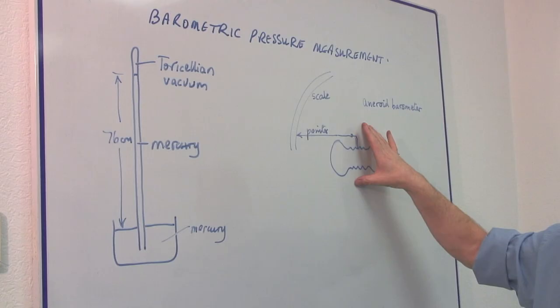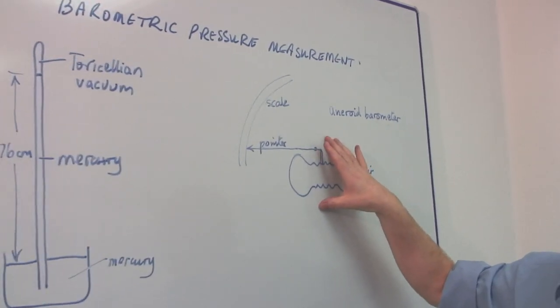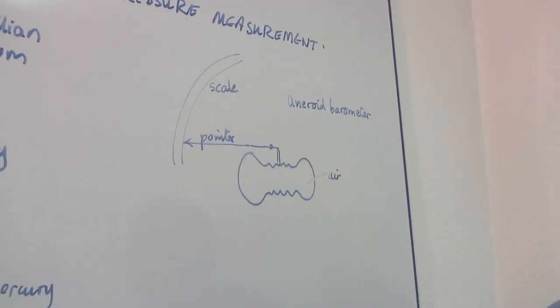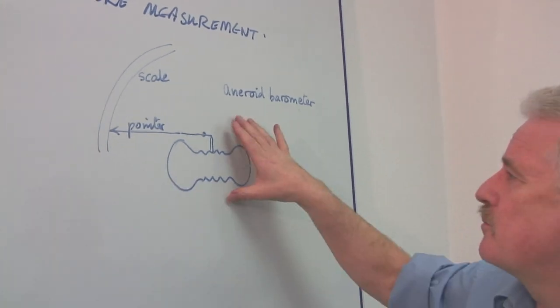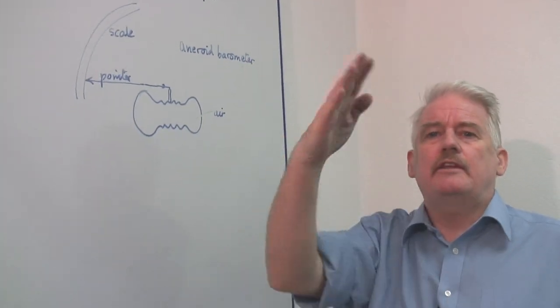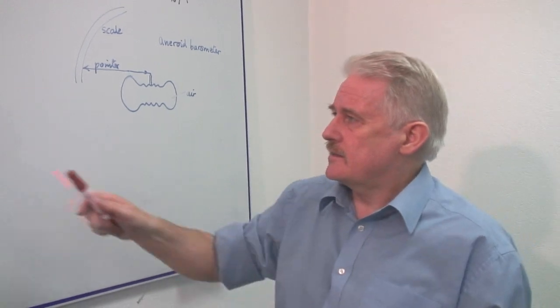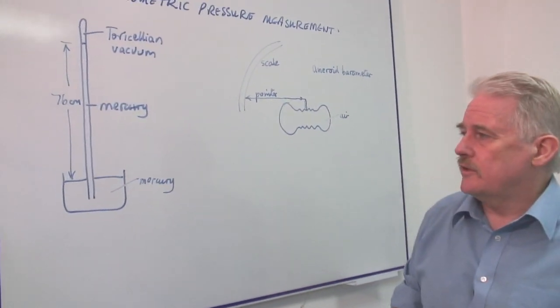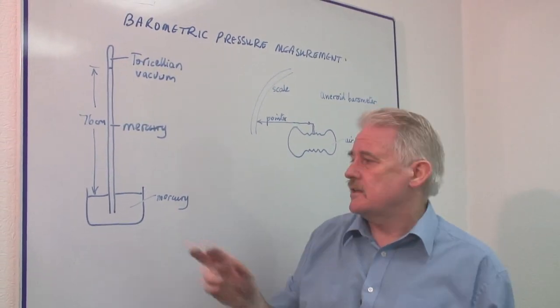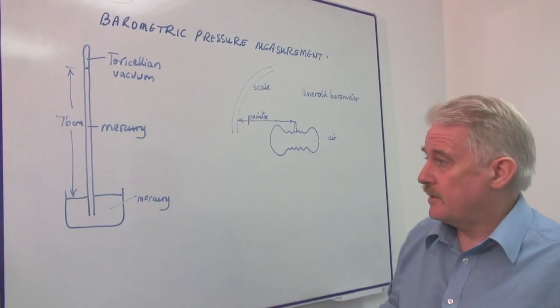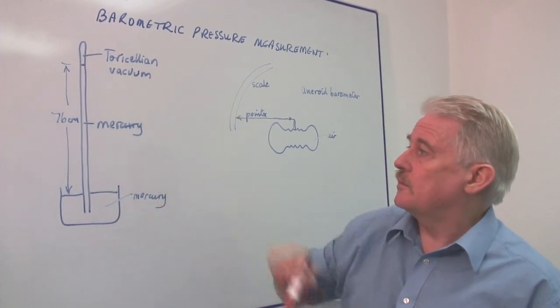This is the cheaper device and safer device and the one that is used in those type of barometers you hang on the wall which have a needle. This type of barometer is the one that tends to be used in laboratories and is very accurate. It simply measures the length of a column of mercury.